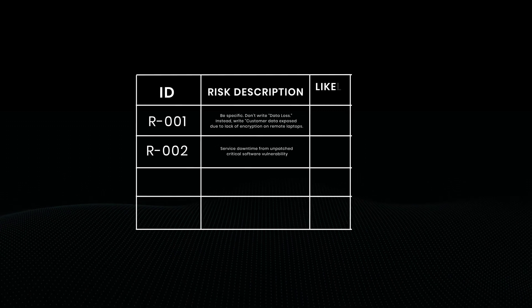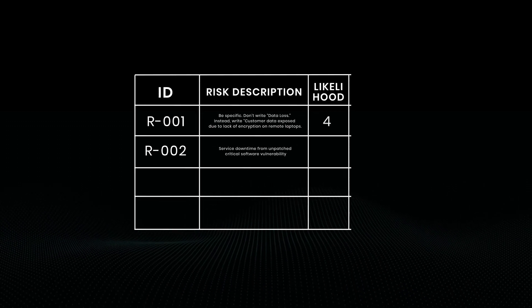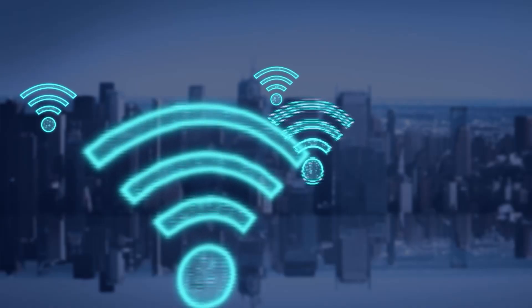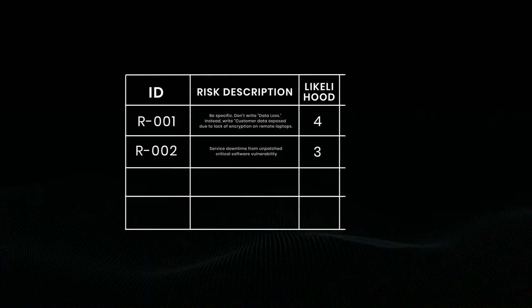Third column is likelihood. On a scale of one to five, how likely is this event to occur? One is rare, three is possible, and five is very likely. Use your environment to estimate this — are people using secure or public Wi-Fi? Have breaches like this happened before?